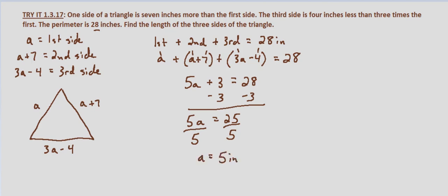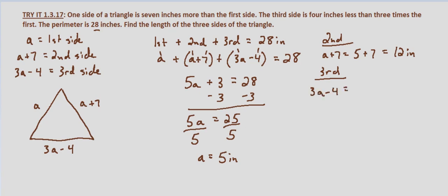The length of the first side is five inches. The second side is A plus seven: five plus seven equals 12 inches. The third side is four less than three times the first side: three A minus four equals three times five minus four, which equals 15 minus four, which equals 11 inches.